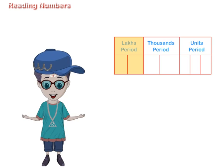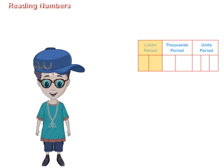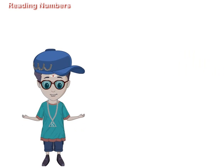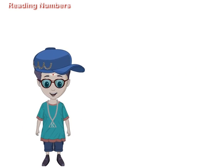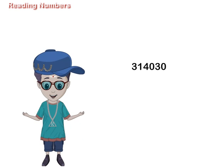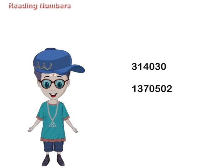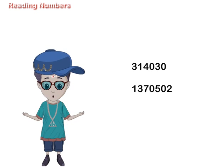We separate the periods by a comma. Let us read and write the number names for 3,14,030 and 13,70,502. First, put a comma after three digits starting from the right. Then put a comma after two digits.